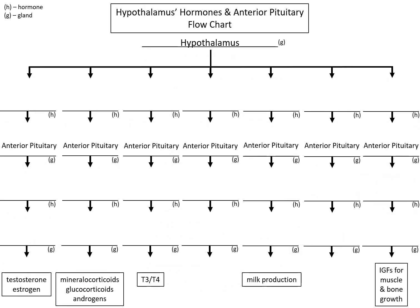This next flowchart will help you understand the relationship that the hypothalamus has with the anterior pituitary and triggering it to do certain things. At the bottom I've listed testosterone, estrogen, mineralocorticoids, glucocorticoids, androgens — mineralocorticoid being aldosterone, glucocorticoid being cortisol — T3, T4, milk production, and growth factor. The hypothalamus communicates with the anterior pituitary in one of two ways: either a releasing hormone or an inhibiting hormone. We have two scenarios where an inhibiting hormone is created.